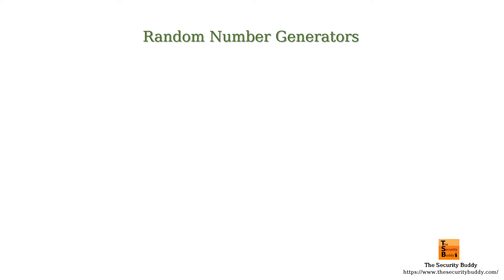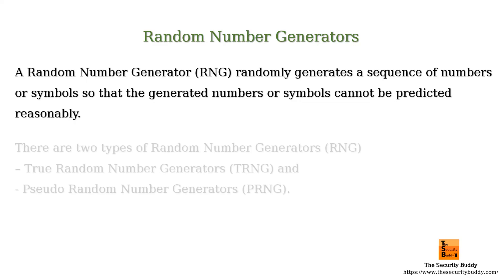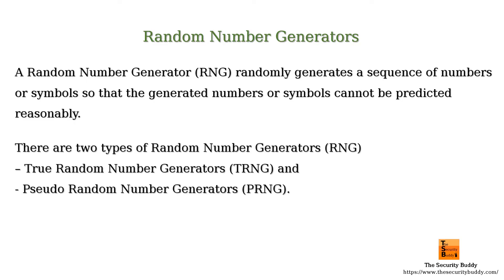A random number generator randomly generates a sequence of numbers or symbols so that the generated numbers or symbols cannot be predicted reasonably. There are two types of random number generators: true random number generators and pseudo random number generators.